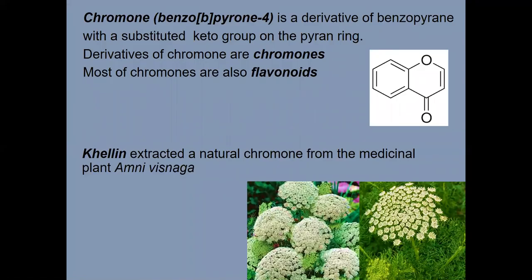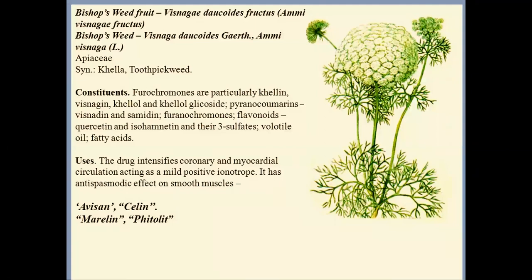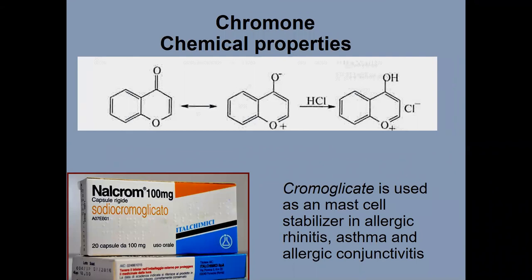Chromene, or benzo-gamma-pyrone, is a derivative of benzopyran with a substituted keto group in the pyrone ring. Derivatives of chromene are chromones. Most chromones are also flavonoids. Khellin was extracted as a natural chromene from the medicinal plant Ammi visnaga. Use: the drug intensifies coronary and myocardial circulation, acting as a mild positive ionotrope. Chromene chemical properties include reactions with mineral acids.